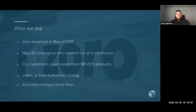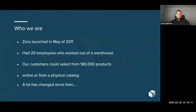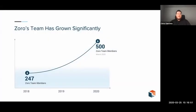Zorro.com was launched in May of 2011 to be a supplier of maintenance, repair, and operation supplies for organizations looking for one place to get everything they need to keep their business running. Back then, Zorro was 20 employees working out of a warehouse, and customers could choose from around 180,000 products on our website. We still offered a physical catalog at the time. Since then, a lot has changed at Zorro, and we have definitely grown — especially over the last two years, Zorro has basically doubled in size to support our journey as an endless aisle supplier.